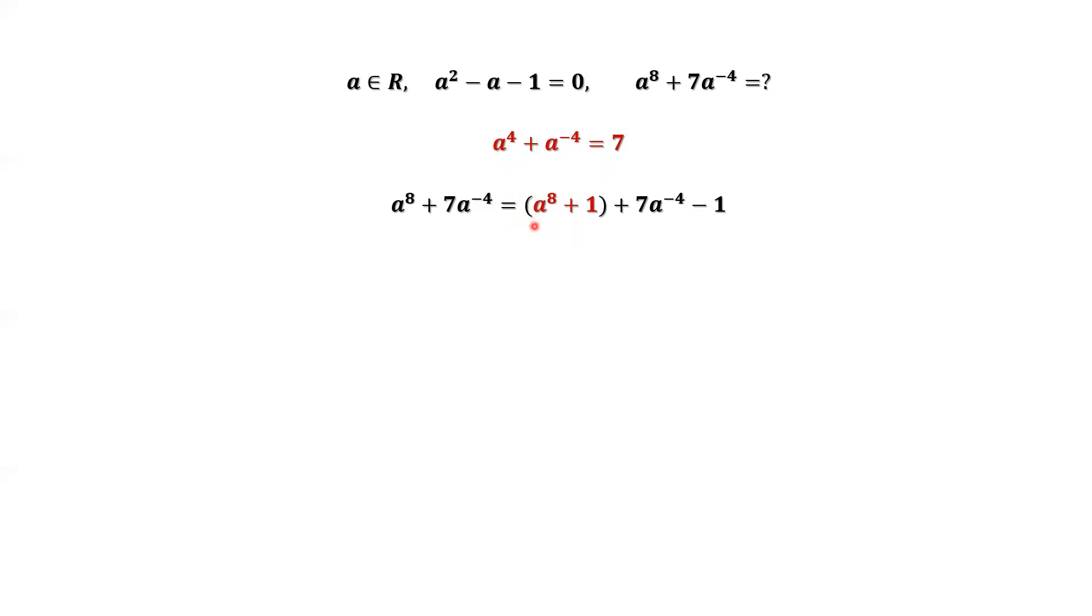Let's factor a to the power of four out from the first part. A to the power of four out. Then the first term you have a to the power of four left. The second term should be a to the power of negative four. A to the power of negative four times a to the power of four equals a to the power of zero, which is one. Now we can see what this is.